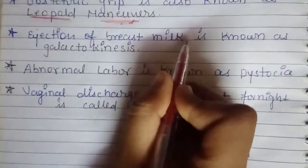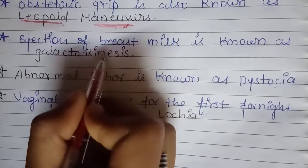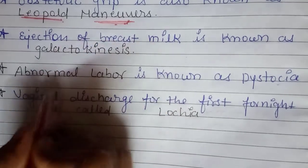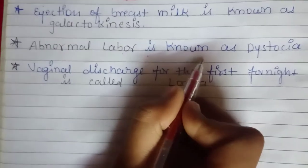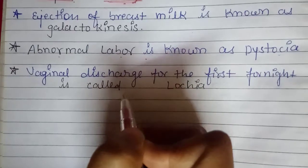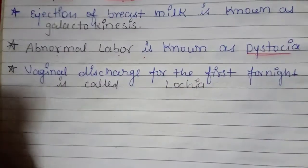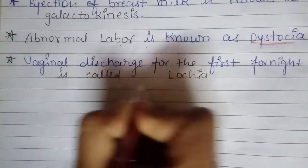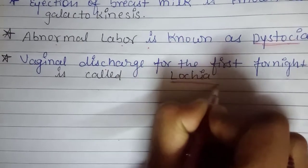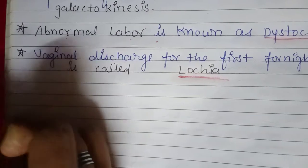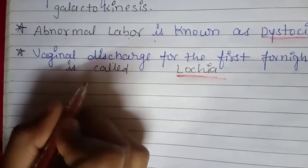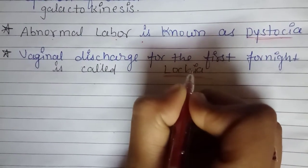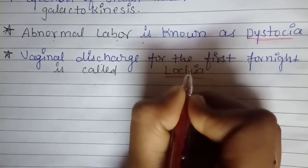Ejection of breast milk is known as galactokinesis. When milk is ejected from the breast, that process is called galactokinesis. Next, abnormal labor is also known as dystocia — if a lady has abnormal labor, it is called dystocia. Then, vaginal discharge after birth for the first few days is called lochia (also pronounced lokiya). It is of three types: lochia alba, lochia serosa, and lochia rubra.